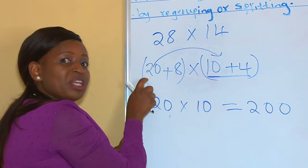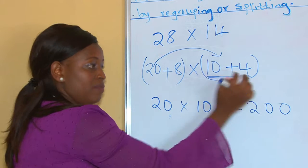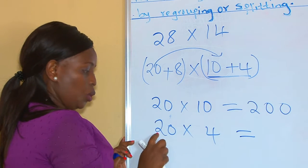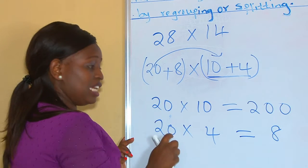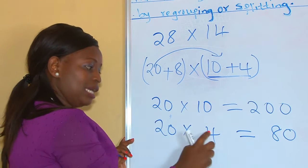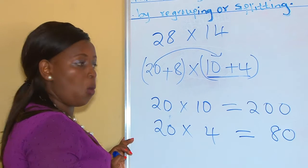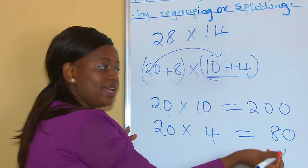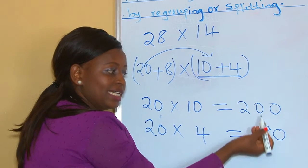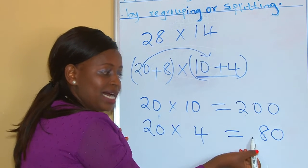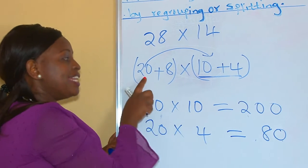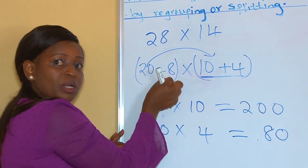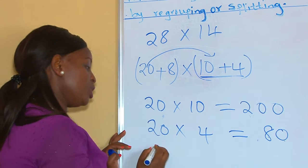We are still multiplying using 20 on this side to finish everything here. So 20 times 4 is what? 2 times 4 is 8, then our zero is there — so 20 times 4 is 80. Make sure also, when you are writing your answers, you align them to the correct place value: 1s under 1s, 10s under 10s, 100s under 100s, and so forth. We are done with 20.